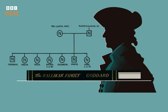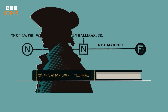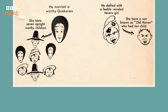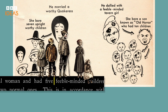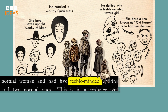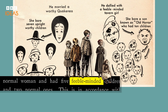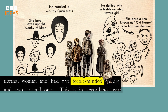But according to the book, Martin Kalakak had a one-night stand with a feeble-minded barmaid. She had a son who became known as Old Horror, who went on to father ten children. According to Goddard, feeble-mindedness was hereditary and the family was full of what he called the lowest types of human beings. But it was a fiction — the barmaid never existed.